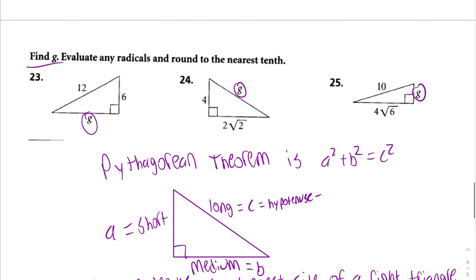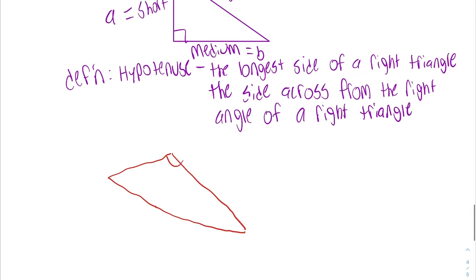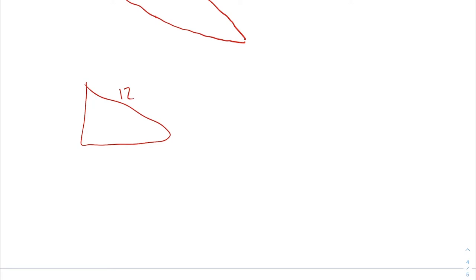So now let's look at number 12. We have this side, which is across from the hypotenuse, so that's going to be C. We have the number 6. I'm going to put that as B, and the letter G is going to be A. So let me just redraw that. 12, G, 6. C, A, B.